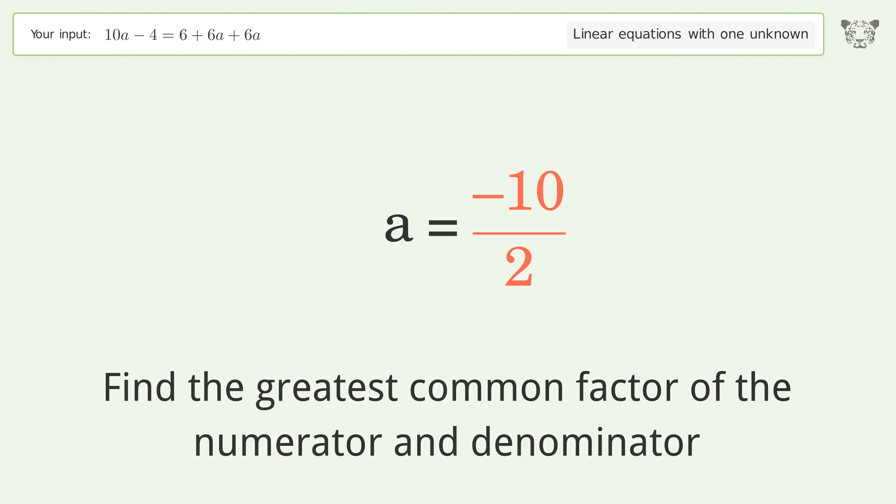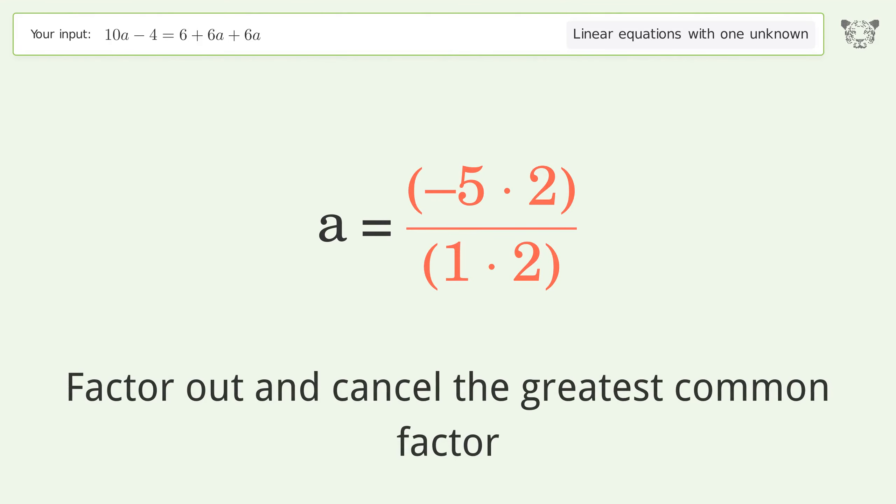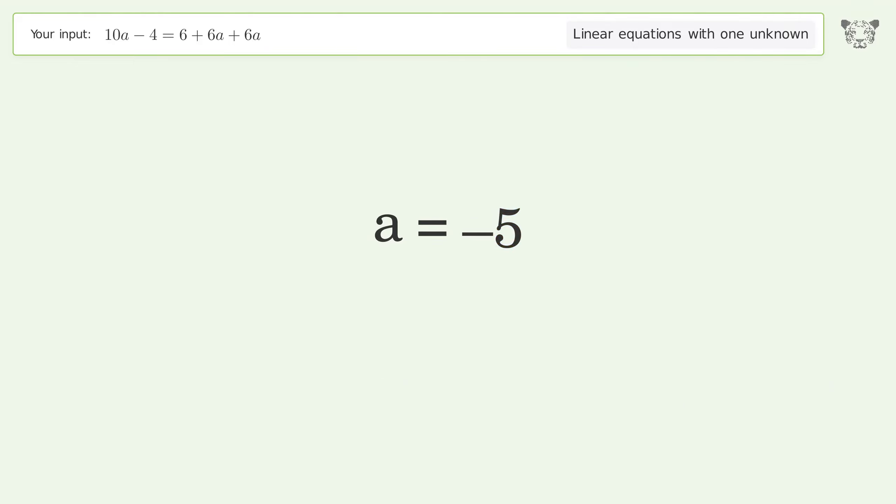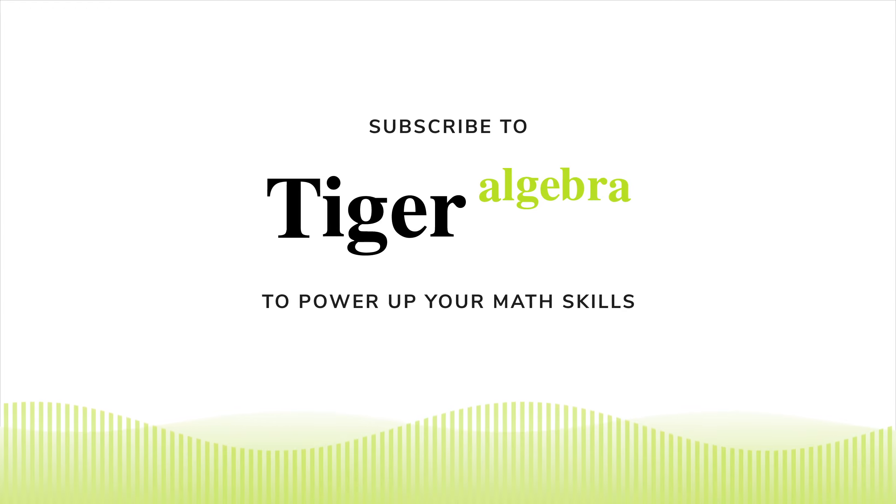Find the greatest common factor of the numerator and denominator. Factor out and cancel the greatest common factor. And so the final result is a equals negative 5.